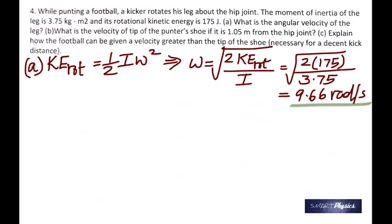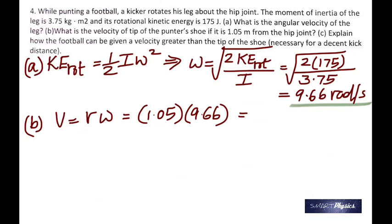And in the B part, you have to find the velocity of the tip of the punter's shoe if it is 1.05 m from the hip joint. How do you find the linear velocity? It's the radius multiplied by the angular velocity. So that equation is important. The radius is 1.05, and omega is what we got here. So that gives 10.1 m per second.